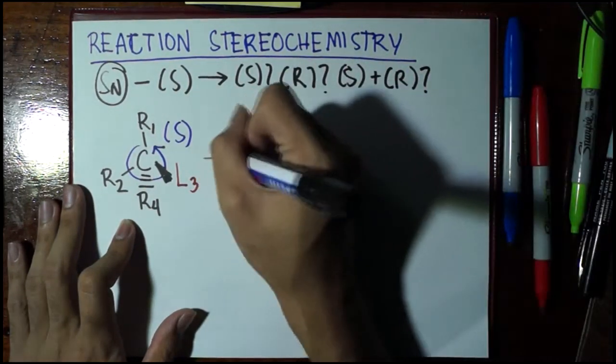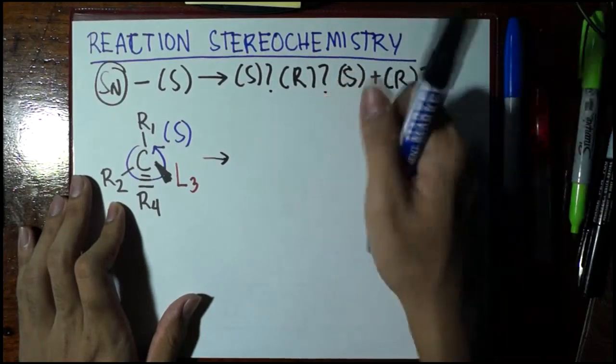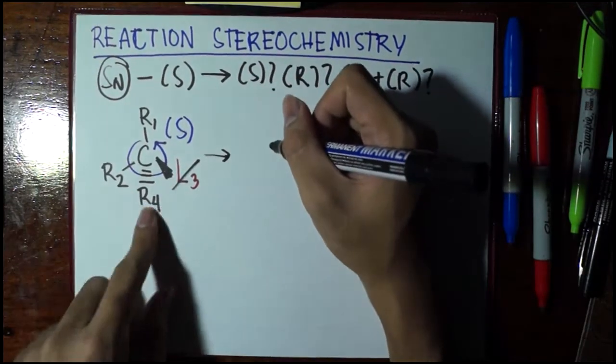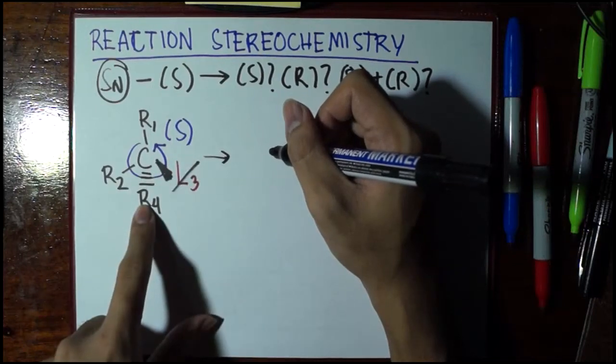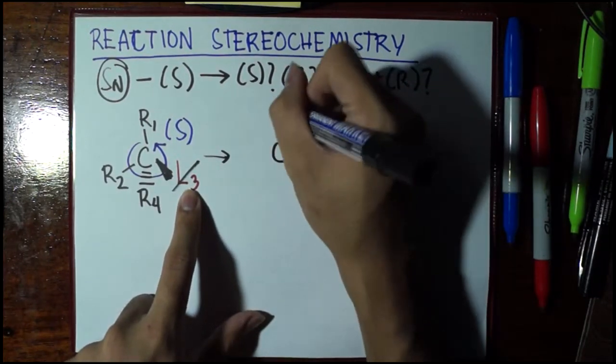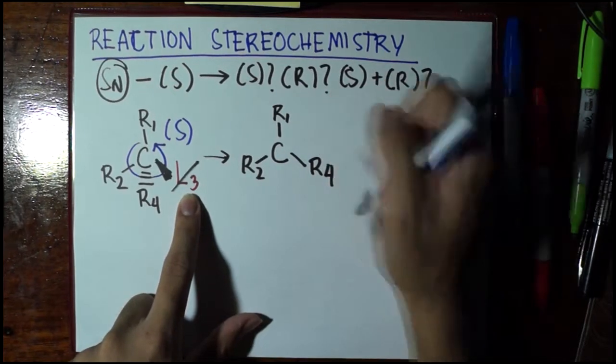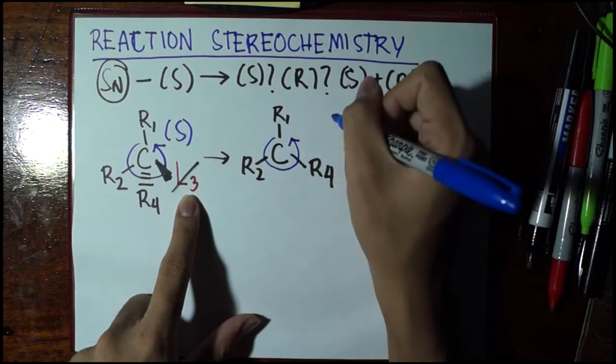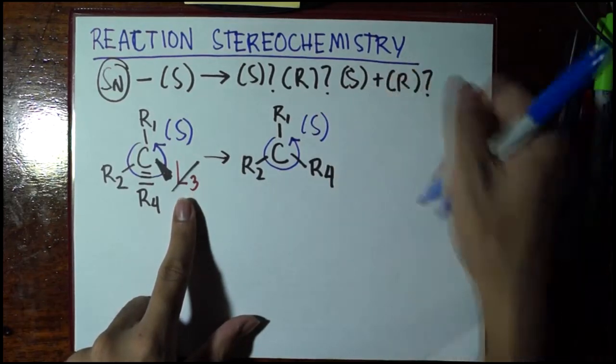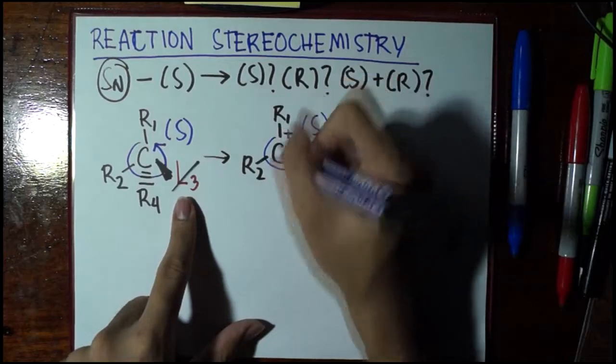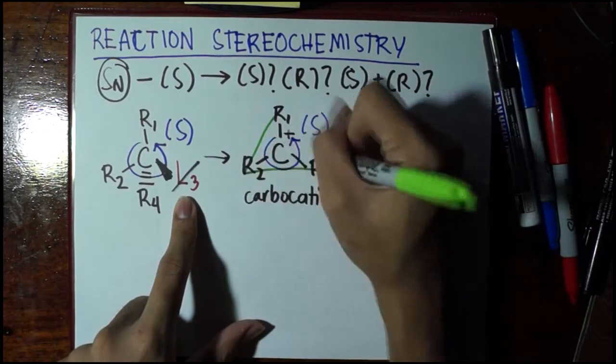Now, in SN1, there is a formation of a carbocation. So, what happens is that the leaving group leaves, and then R4 is at the back, L3 here is at the front right portion. If the front right portion becomes vacant, this one will occupy this position. And so, by that case, R4 will move to the front. And still, we see that the direction of the substituents gives us an S stereochemistry. So, here we have the carbocation with a positive charge.